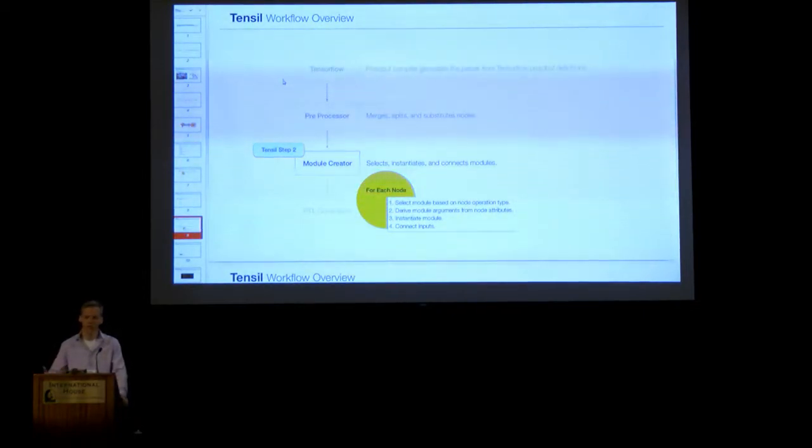Then the next stage in the pipeline is the module creator. This is pretty simple. It just chooses which module out of a library of modules that I wrote. It chooses which module should be instantiated in order to satisfy this computational operation requirement. It will then derive the module's arguments. So these would be the parameters to the generator. Things like the shapes of the input tensors, that kind of stuff. It will also use the modules, input modules, in order to derive those attributes. Finally, it will instantiate the module, which then configures itself, given the set of inputs, and then connect up the inputs. Connect up the input nodes to the computation.